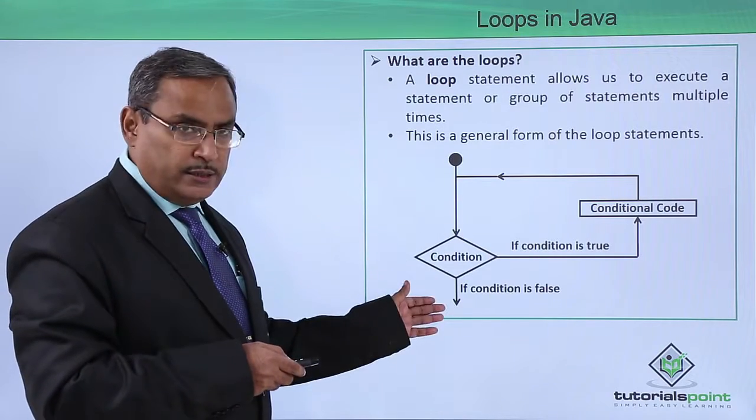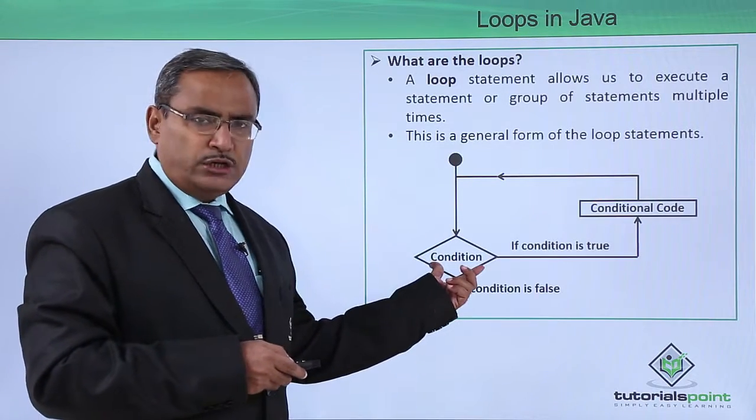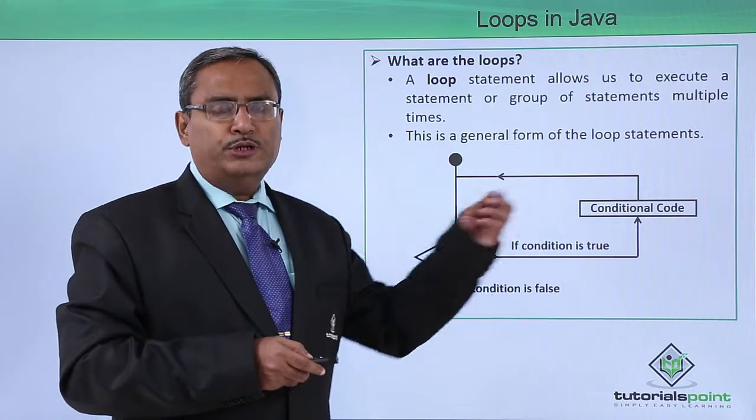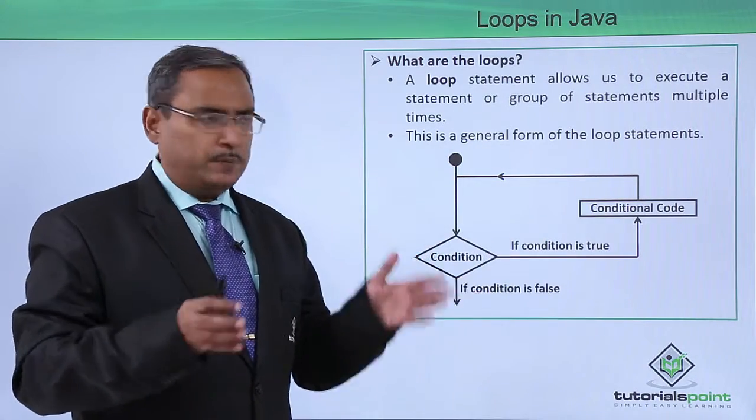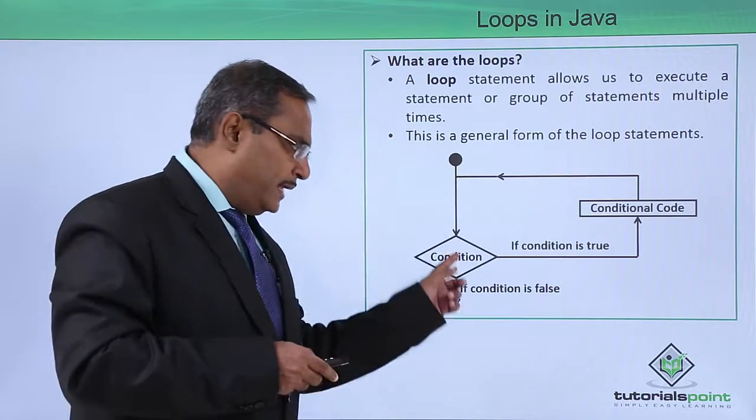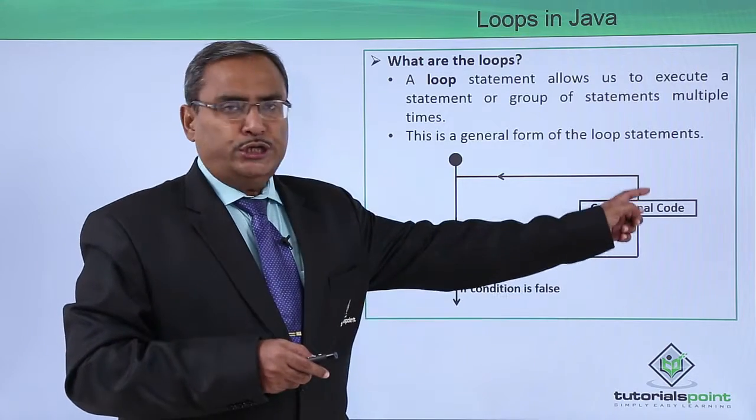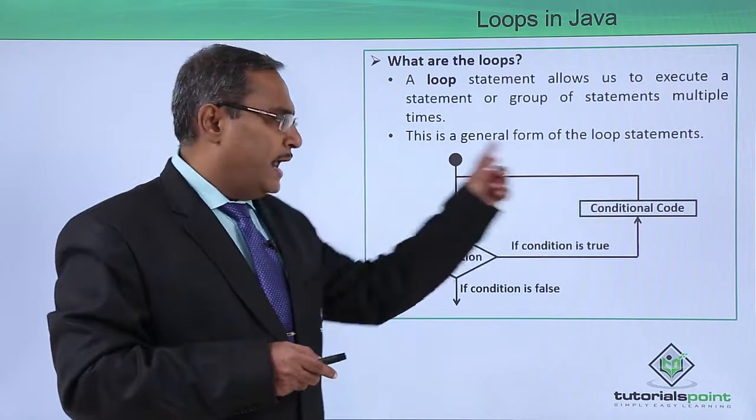Here you can see the control comes from above, the condition is checked. If the condition is true, then this conditional block containing certain statements will get executed. Again the condition will be checked, and if the condition is still true, then the conditional block will be executed again. In this way, the conditional block can be executed multiple times.